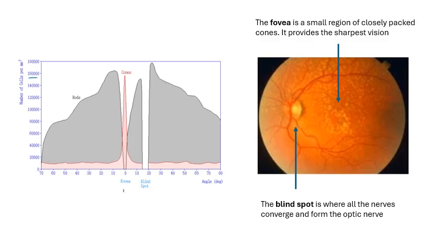That's the fovea which is just cones. Then notice the number of rods shoots up and then goes down extending right to 70-80 degrees. Notice the blind spot, that's where the optic nerve is so there aren't any receptors there. The fovea is a small region of closely packed cones that provides the sharpest vision. If you see it on a retina it looks yellow. The blind spot is where all the nerves converge and form the optic nerve.